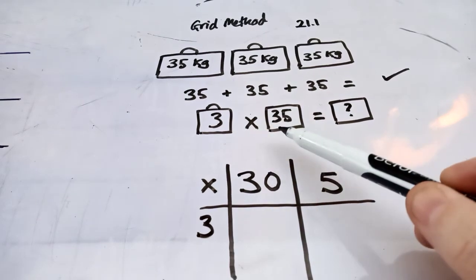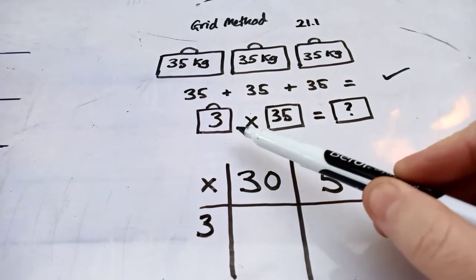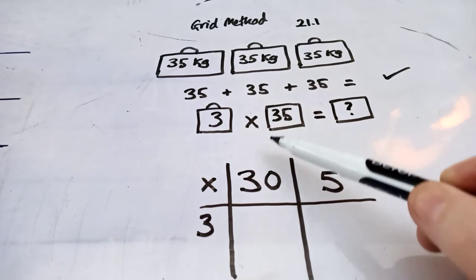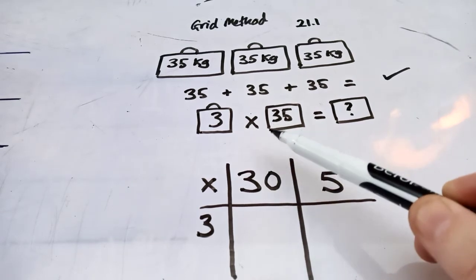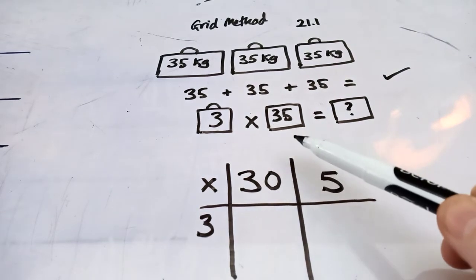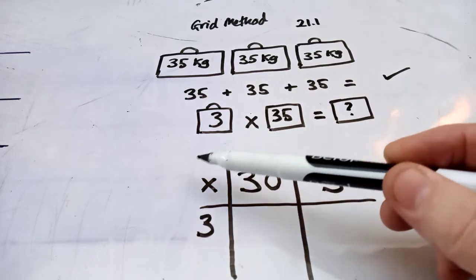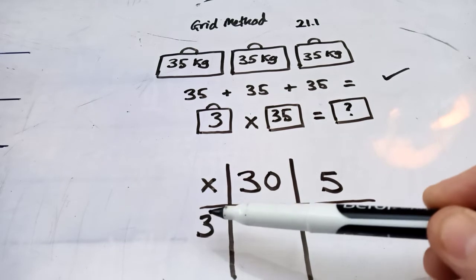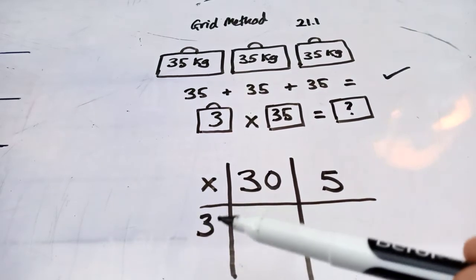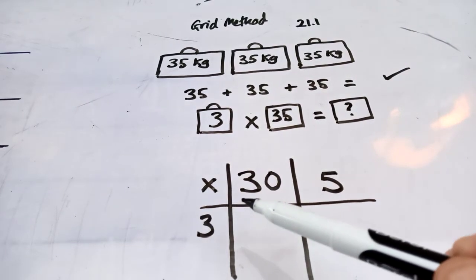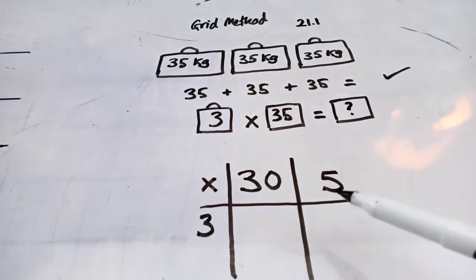Okay, so 35 times 3, or 3 times 35, you put your 30 there, you put your 5 ones there, and then what you're timesing it by goes there. And then you ask yourselves, right, what is 3 times, we'll go for this one first, what's 3 times 5?